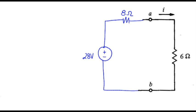So at this point, the problem is pretty simple. We can do 24 volts is applied across the series combination of 8 and 6. So that's 28 over 14, which is...